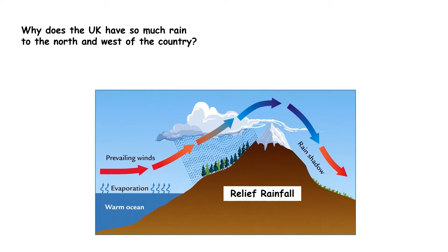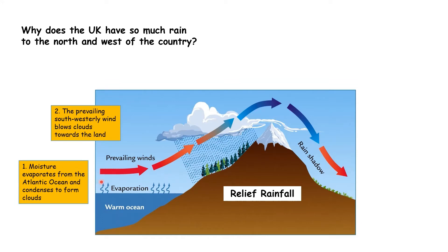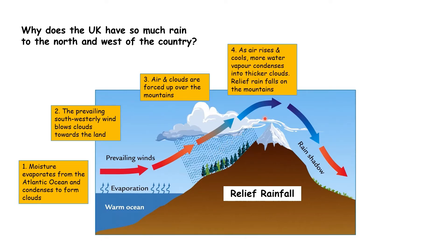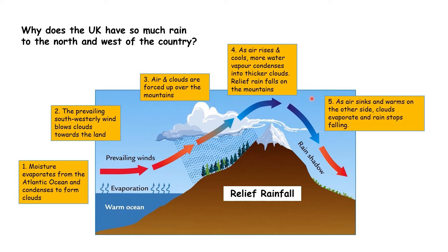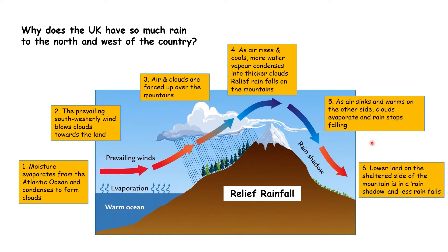It's drier to the south and east where we have lowland, and wetter to the north and west where we have our upland and mountains. The reason for this is relief rainfall. Moisture evaporates from the Atlantic Ocean and condenses to form clouds. The prevailing winds come from the west and blow this moist air towards the land. As the moist air hits the mountains, it is forced to rise, cools and condenses, forming thick clouds and rainfall above the mountains — known as relief rainfall. As the air goes down the other side, it is dry, giving very little rainfall — known as the rain shadow.